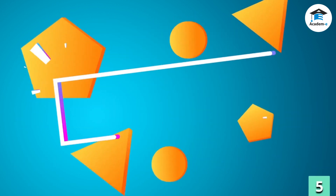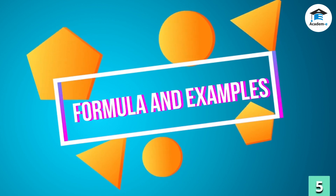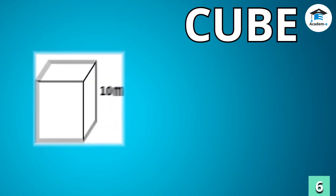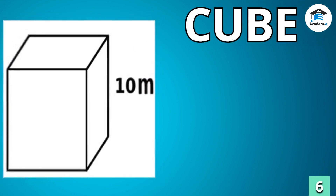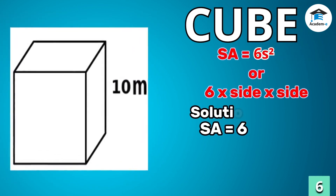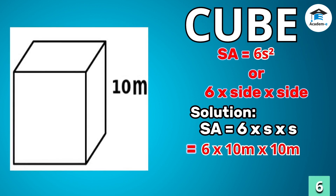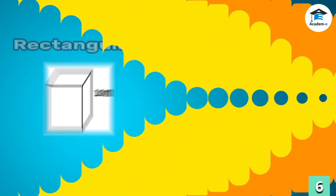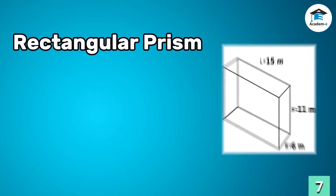Here are some solid figures with their specific formulas and examples. Cube: to get the surface area of a cube, use the formula 6 times side squared, or 6 times side times side. That is 6 times 10 times 10; therefore, the surface area of the cube is 600 square meters.